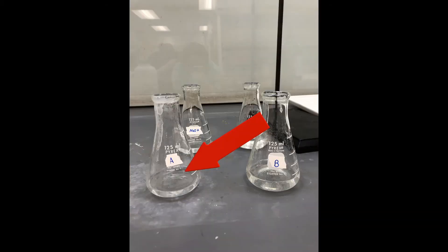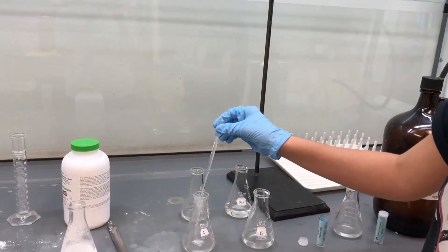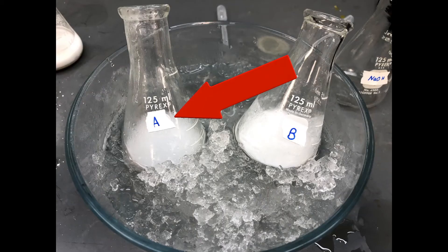For flask A, you will add NaOH until it becomes basic and test the pH as you go. When the pH becomes about 10, cool the flask in an ice bath in order to form precipitate, which will later be collected by vacuum filtration. If the precipitate does not form, add more NaOH.